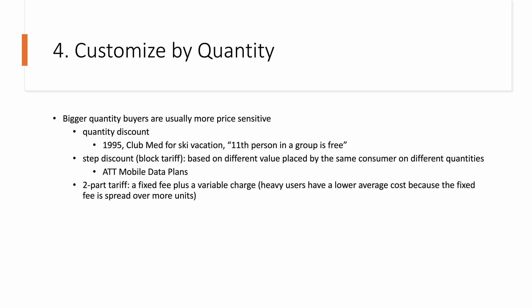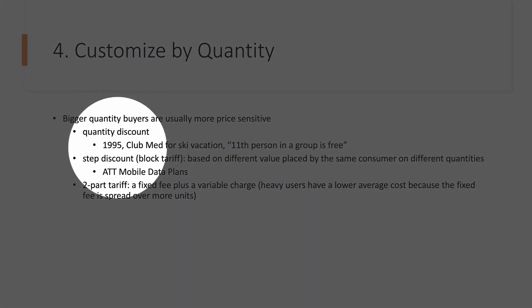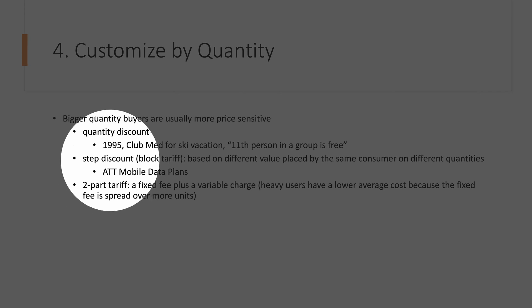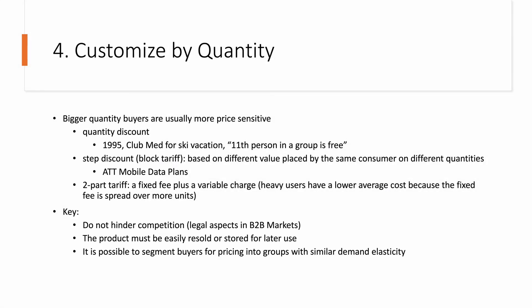The fourth way to customize price is to customize by quantity. The most straightforward way is to offer a quantity discount or sometimes a step discount — in both ways offering different prices based on the total size of demand. The second way is a two-part tariff, where you charge a fixed fee and then in addition charge a usage-based fee. To customize by quantity, it's important not to hinder competition — there are laws restricting quantity discounts — and the product must be easily resold or stored to encourage large quantity purchase and inventory build-up.